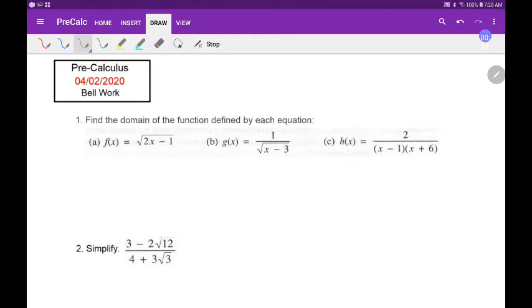other than a positive or a 0 underneath that radical. So we would say 2x minus 1 has to be greater than or equal to 0. If it's less than 0 we have a problem. So we're gonna say plus 1 on both sides, we'll say 2x is greater than or equal to 1, and we'll divide by 2.